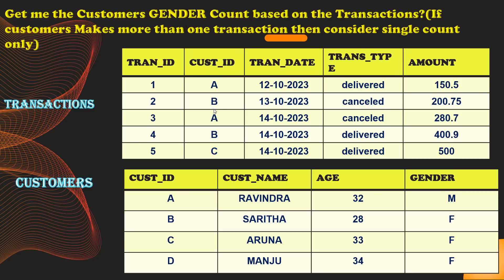We need to join these two tables using the primary key-foreign key relationship. The question is: get the customer gender count based on transactions — whoever made transactions, we only count those. For example, customer A appears three times in transactions but we consider it as a single count. So overall, male count is 1 and female count is 2.